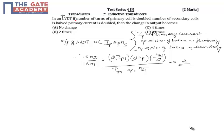Here we are given an LVDT where the number of turns of primary coil is doubled and the number of secondary coils is halved, and the primary current is doubled. So what is the change in output when we consider it with a normal LVDT transducer?